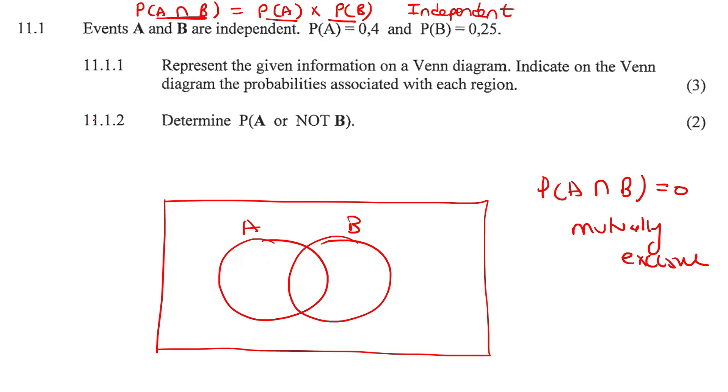So what I would say we should do first is they told us that probability of A and B, because they are independent, we can multiply them, which is gonna be 0.4 multiplied by 0.25, which is gonna be 0.1. So that means this part is 0.1. That then means this part is 0.3, so that A is 0.4 in total. And then this would be 0.15, so that B is 0.25 in total.